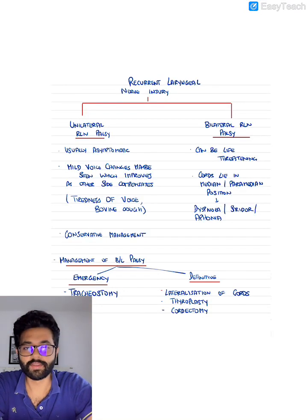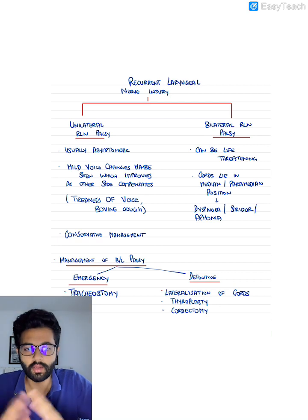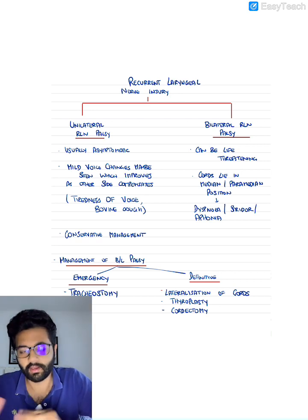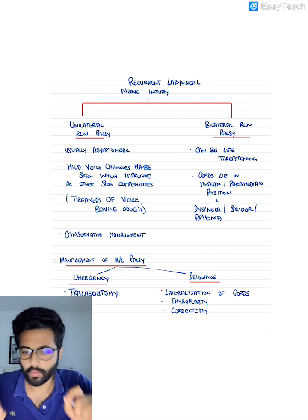Hi guys, so in this video we are going to talk about injury to the recurrent laryngeal nerve. So as you know there are two types of injuries, unilateral recurrent laryngeal nerve injury and bilateral. That's when the recurrent laryngeal nerve on both sides gets injured.